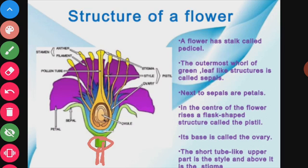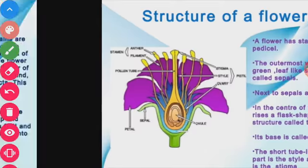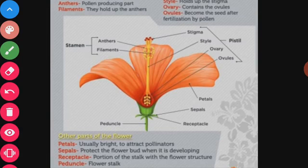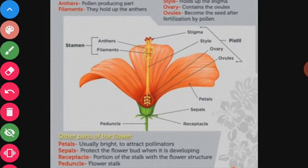Sepals and petals are the non-reproductive parts of the flower. Stamens and carpel are the reproductive parts — stamen is the male reproductive part and carpel is the female reproductive part. The base of the flower, with which all parts of the flower are attached, is called the receptacle. As you can see in this structure, that whole base part is known as the receptacle.